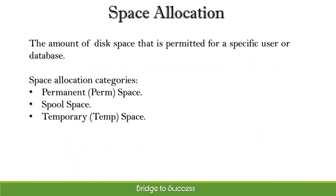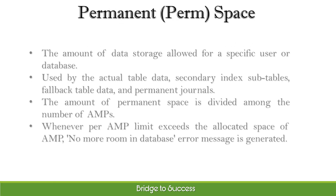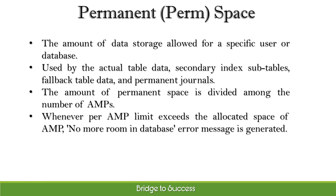Space allocation is defined as the amount of disk space that is permitted for a specific user or database. Teradata has three different categories of space allocation: permanent space, spool space, and temporary space. Permanent space is the amount of data storage allowed for a specific user or database. The space is used by the actual table data, secondary index subtables, fallback table data, and permanent journals.